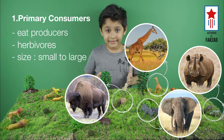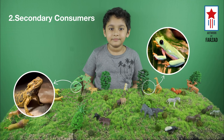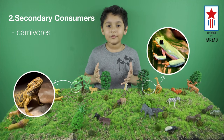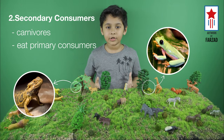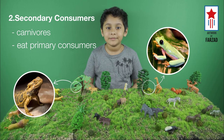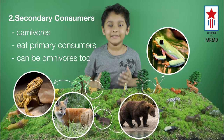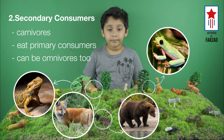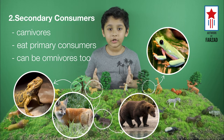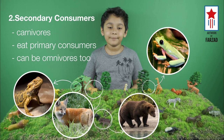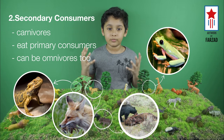In grassland, the secondary consumers can be frogs, lizards, etc. They are carnivores in nature, meaning they eat meat. They feast on primary consumers like grasshoppers. We also see omnivores like fox and bear as secondary consumers. Bears and foxes are exceptional because they can function as primary consumers when they eat berries, and also as secondary consumers when they eat bison or small mammals.